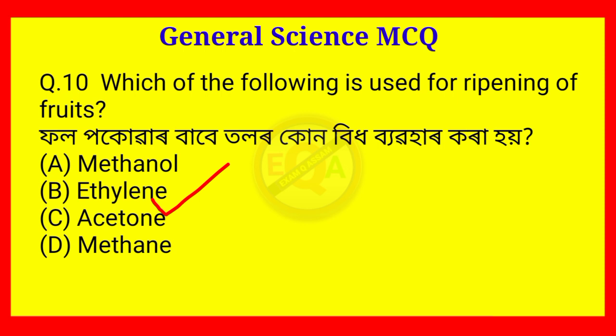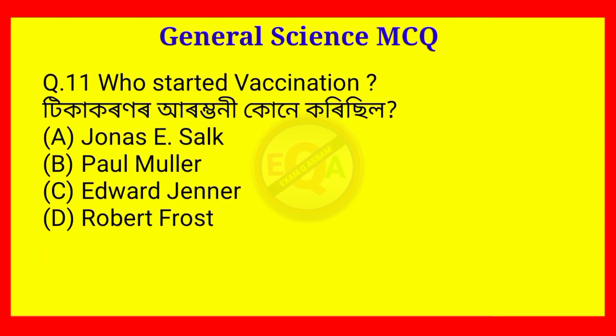Question number 11. Who started vaccination? The answer is Option C — Edward Jenner.